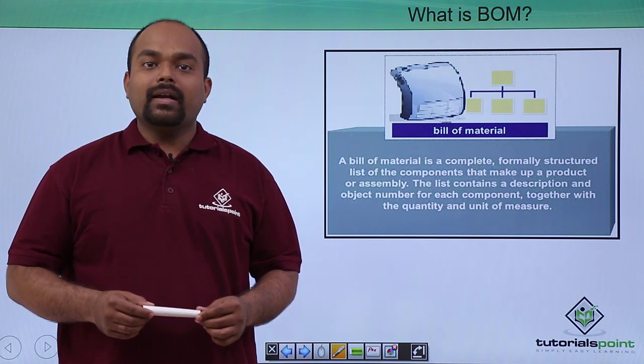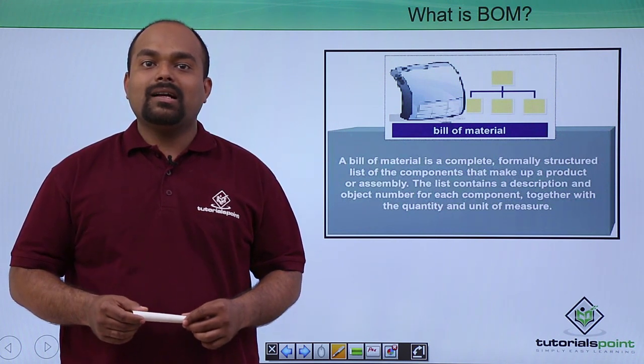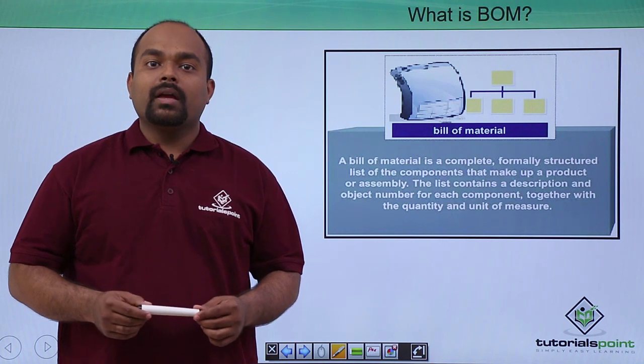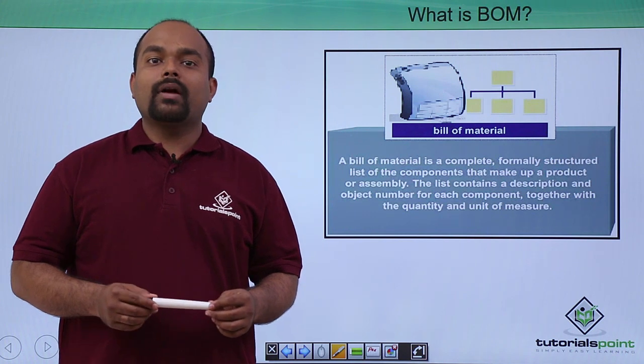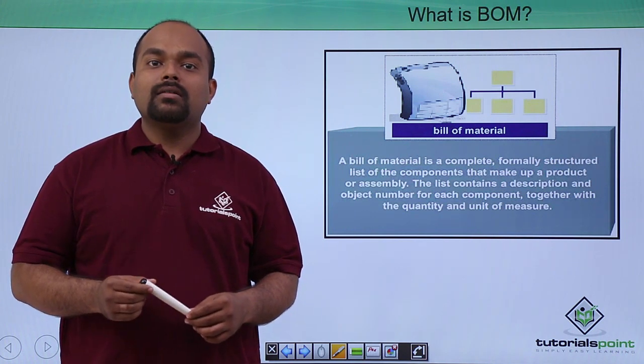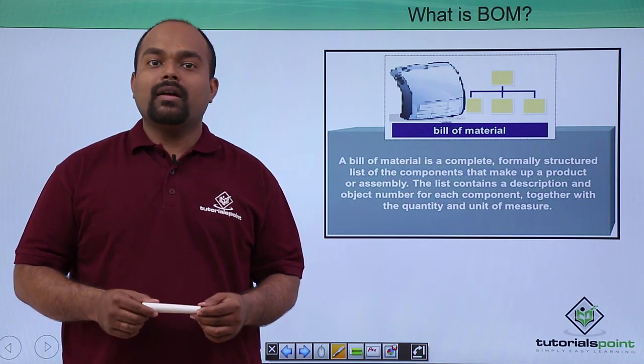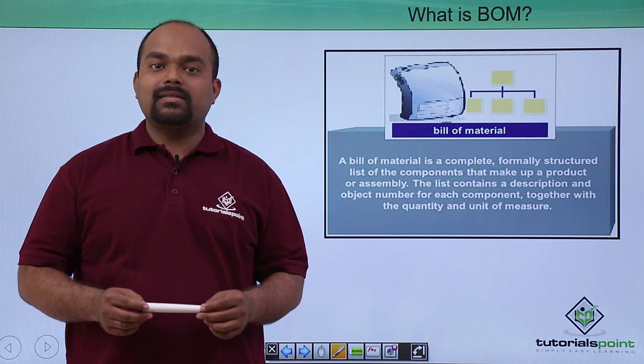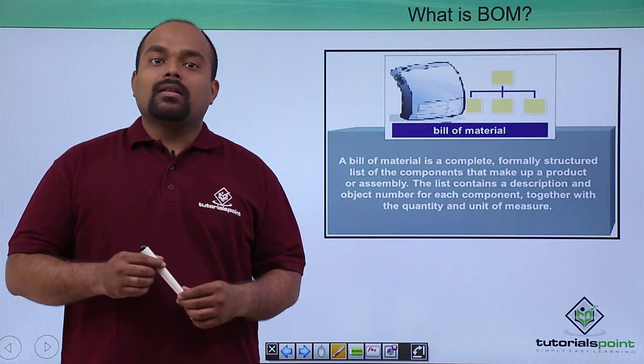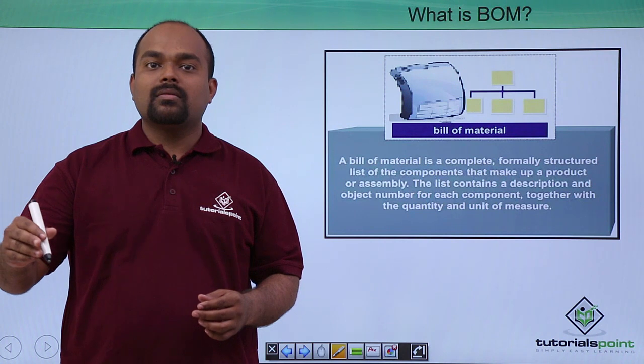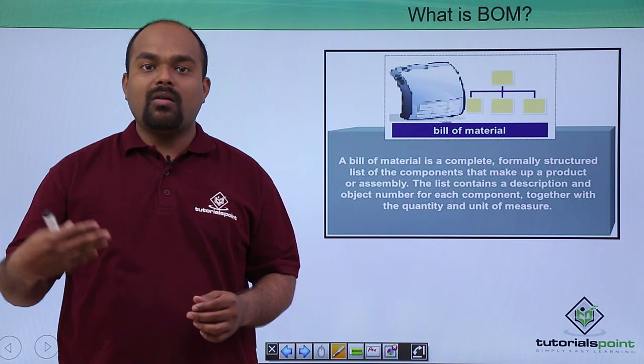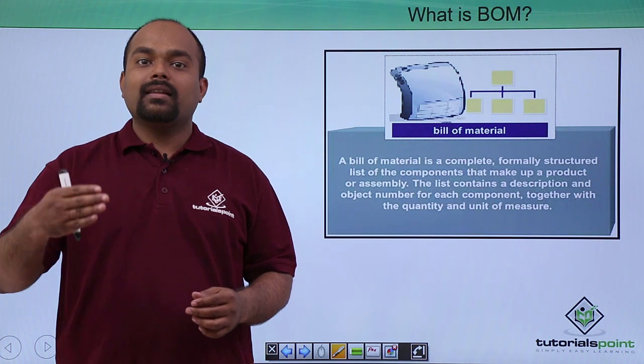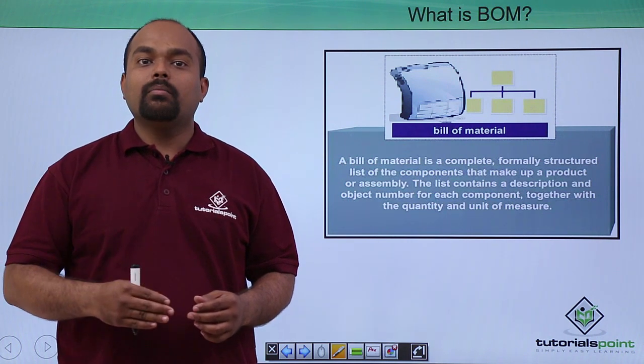For example, you can take a bill of material like a pen. If you want a pen as a finished product, then two caps are required, one body is required, and one refill is required. Like this, there are many finished goods products. Under those finished goods, raw materials are required and that will be maintained in the bill of material.